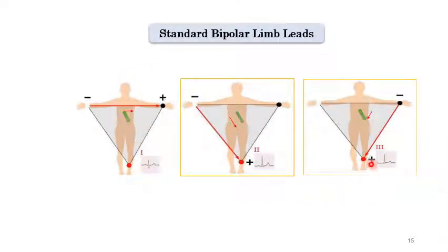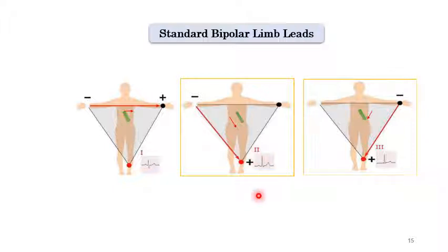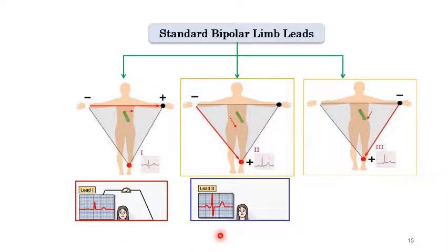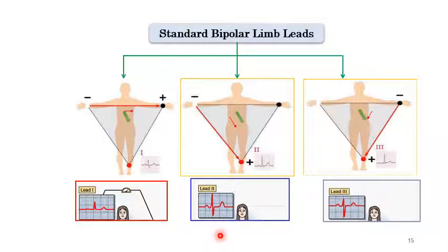In summary, for lead one, lead two, and lead three: we have seen the largest QRS deflection for lead two, and smaller ones for lead three and lead one. Lead two has the largest amplitude of deflections, while lead one and lead three have smaller ones.